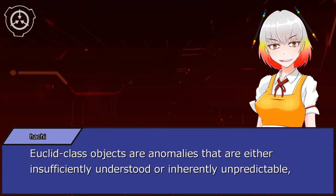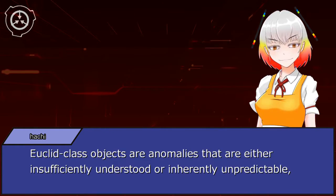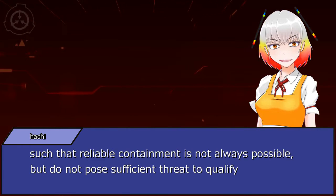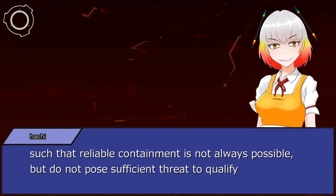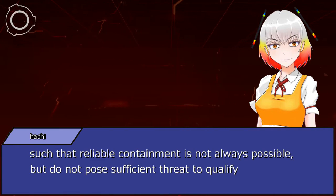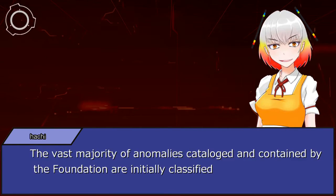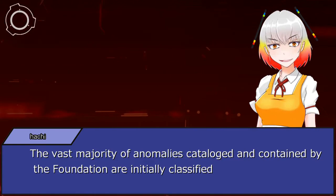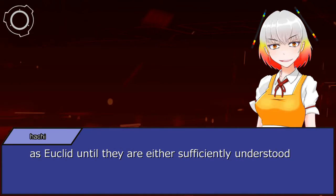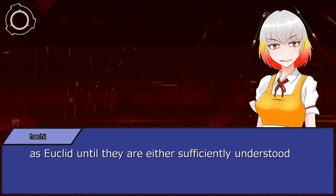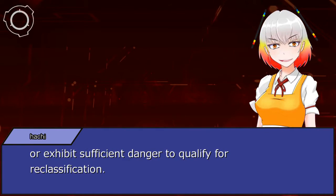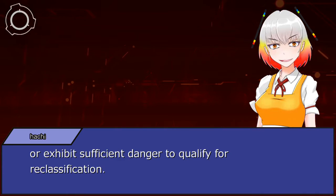Euclid-class objects are anomalies that are either insufficiently understood or inherently unpredictable, such that reliable containment is not always possible, but do not pose sufficient threat to qualify for Keter classification. The vast majority of anomalies catalogued and contained by the Foundation are initially classified as Euclid until they are either sufficiently understood or exhibit sufficient danger to qualify for reclassification.